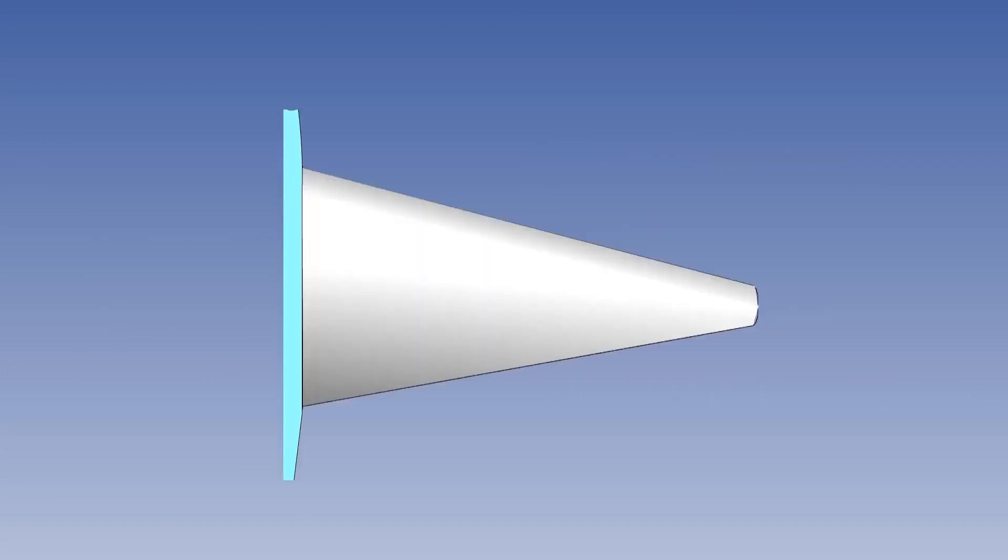Compared to a rectangular wing, a tapered wing creates lower bending moments for a given span and is more efficient. The airflow separation on a tapered wing happens first in the area of the wingtips, reducing lift on the outboard part of the wing.